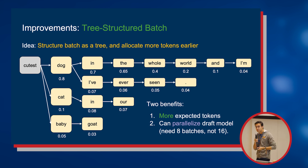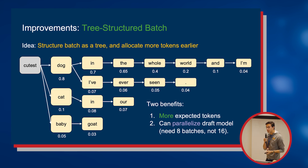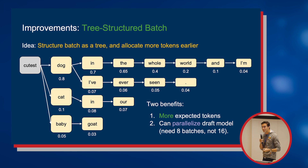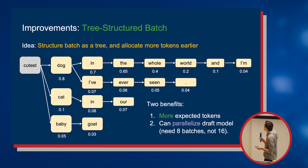There are two benefits to the tree structure. First, I get more expected tokens for every batch I run. Second, it's actually cheaper to generate this batch, because I can generate it in parallel by running only the number of batches equal to the depth of the tree rather than the number of nodes. So it's both a better structure and you can do it locally. It's a little harder to implement, but not too bad.